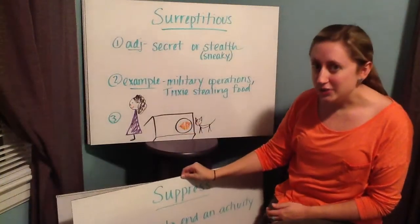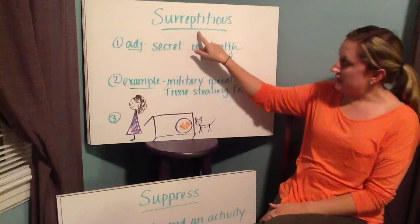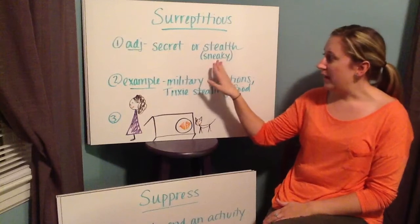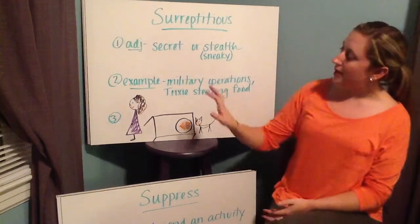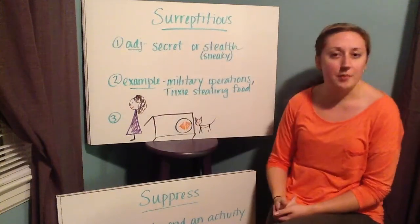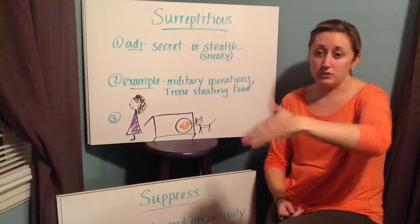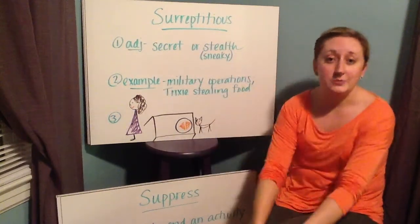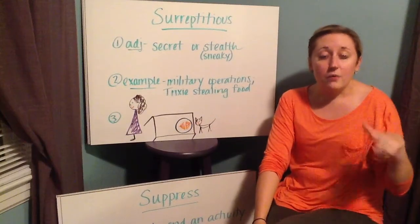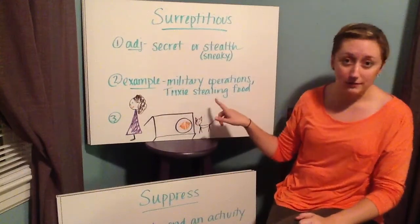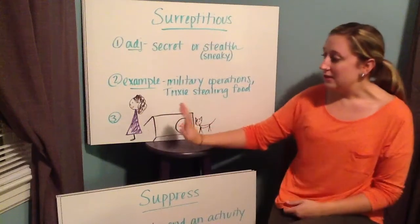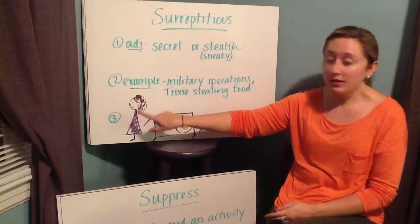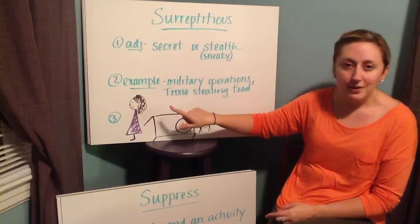Your next word is surreptitious — be careful of the spelling with T-I-T-I-O-U-S. It's an adjective that means secret or stealthy, and stealth means sneaky. An example is military operations: if the military is trying to invade or check on something they don't want the other party to know, they're going to be surreptitious — sneaky, going where the other people don't see them. I also put Trixie my dog stealing food when Alex's back is turned — doing it in secret, stealthily.